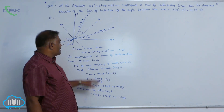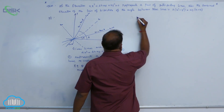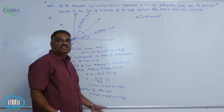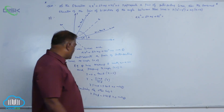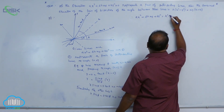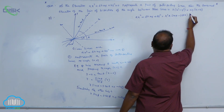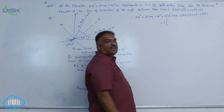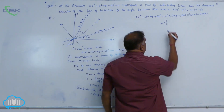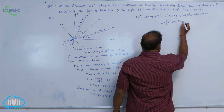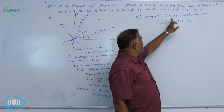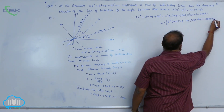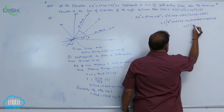When you multiply these two equations, you need to get the original equation. Therefore ax² + 2hxy + by² = λ(x sin θ - y cos θ)(x sin φ - y cos φ). Expanding: λ[x² sin θ sin φ - xy(sin θ cos φ + cos θ sin φ) + y² cos θ cos φ].